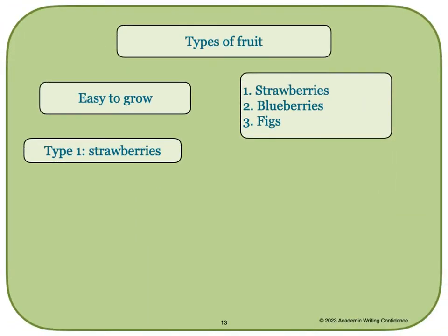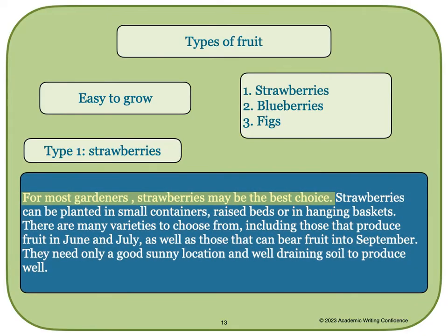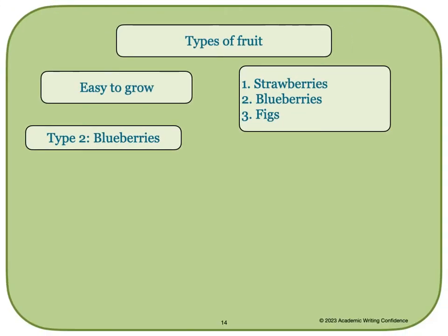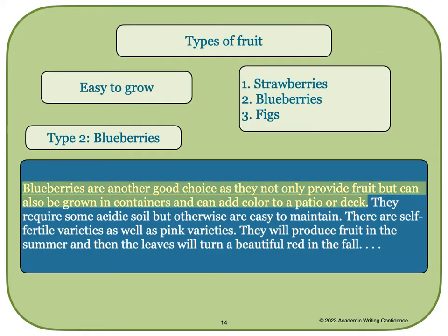We'll now write our first type of easy-to-grow fruits. The body paragraph would start something like this: 'For most gardeners, strawberries may be the best choice,' and then you would give more information and some examples. You would then continue with your second type, blueberries: 'Blueberries are another good choice as they not only provide fruit, but can also be grown in containers and can add color to a patio or a deck.' And then you would continue and write another paragraph about figs.